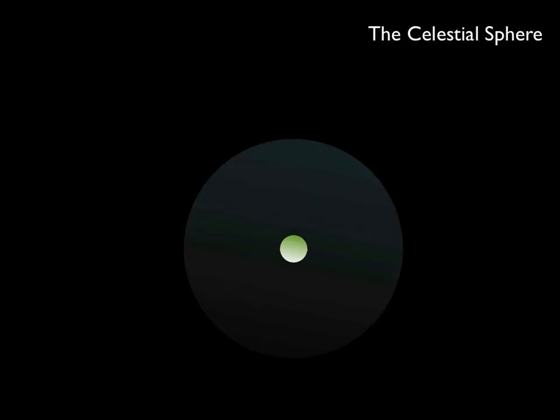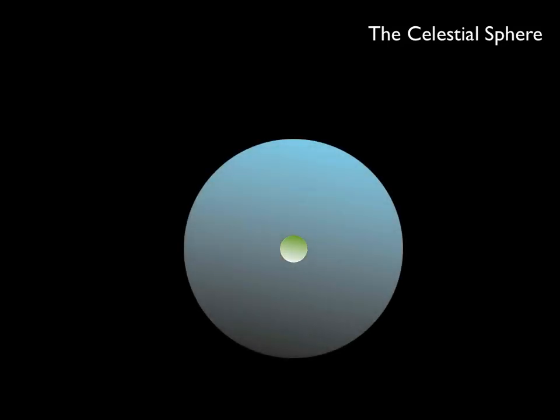Because the Earth is a sphere, we represent the sky as a celestial sphere surrounding the Earth, upon which all celestial objects are projected, regardless of how far away they are from the Earth.